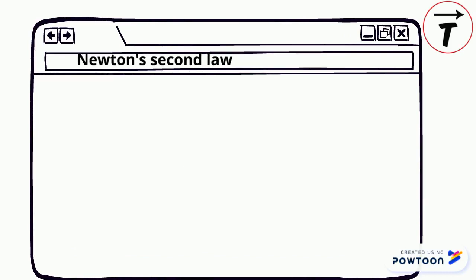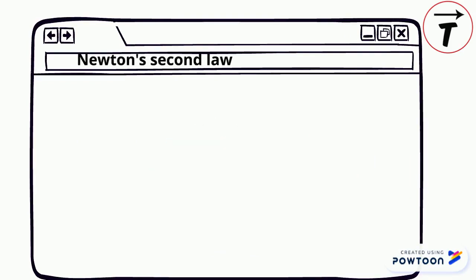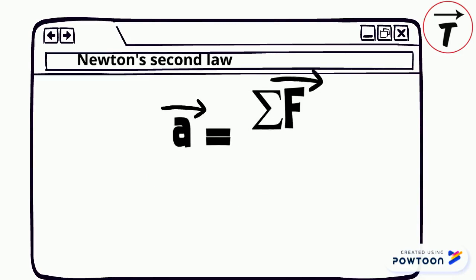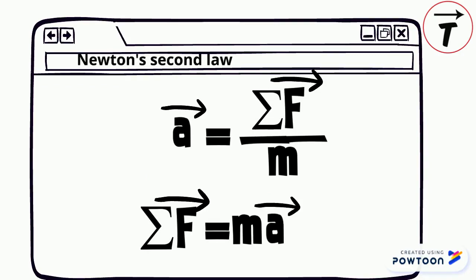Newton was the first to realize that the acceleration produced depends not only on how hard we push or pull an object, but also on the object's mass. Acceleration equals the sum of forces over mass. We can rearrange Newton's second law to: sum of forces equals mass times acceleration. Note that the net force acting on an object and the resulting acceleration are always in the same direction.